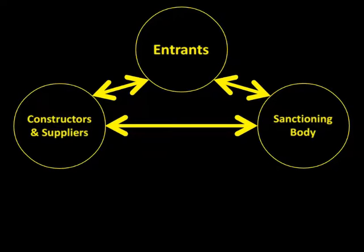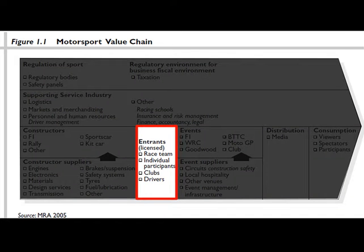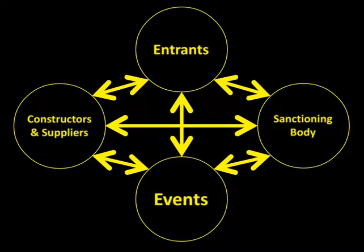At the global level, the entrants are often the OEMs themselves — for example, Audi as the entrant at the 24 Hours of Le Mans. At the more local level, we could think of Andretti Racing as a particular racing team or entrant entered into multiple sanctioning bodies beyond what they're traditionally known for with IndyCar. We won't spend too much time on entrants because this is typically what most people think all of motorsport is — racing teams and drivers — and the point of this lecture is that it's a whole lot more than just that.